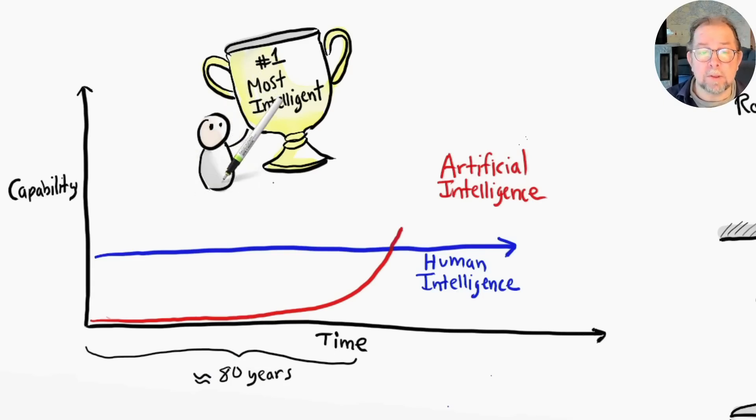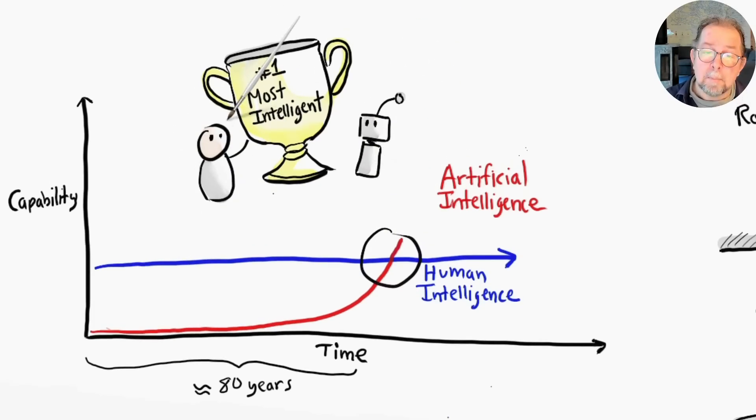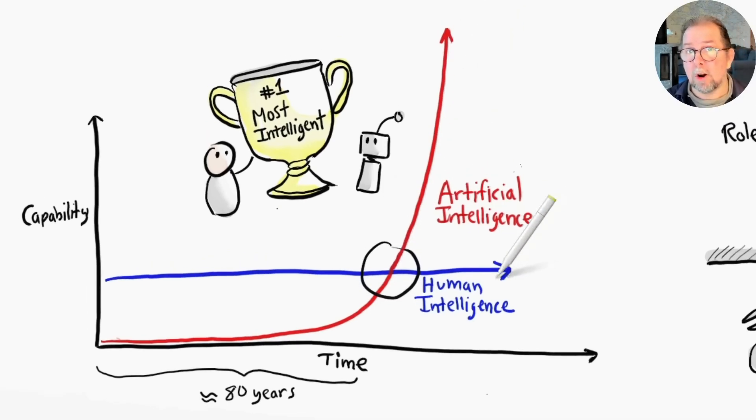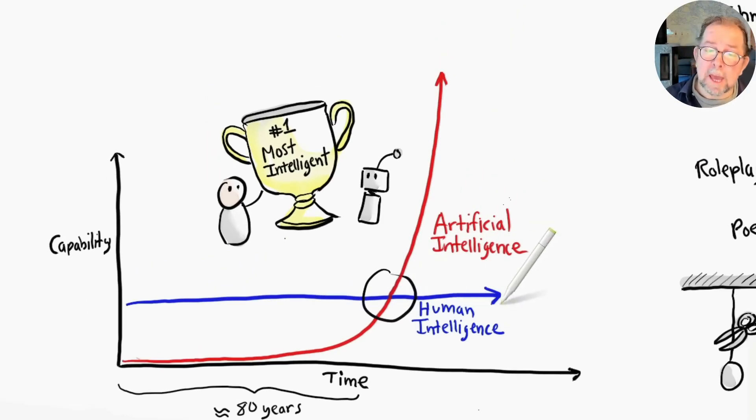So we are right here at the crossing point where AI is better at some things and humans are better at some things. But AI's capabilities are improving at an exponential rate while ours aren't. We don't know how long that exponential improvement will continue or if it will level off at some point, but we're definitely entering a new world order.